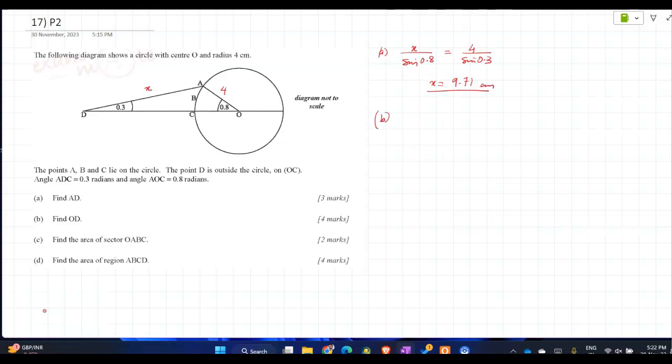What you need to do is, sum of angles of triangle is equal to pi radians. So 0.3 plus 0.8 plus angle A will be pi radians. So your angle A would be pi minus 1.1. Okay, so this angle would be pi minus 1.1.